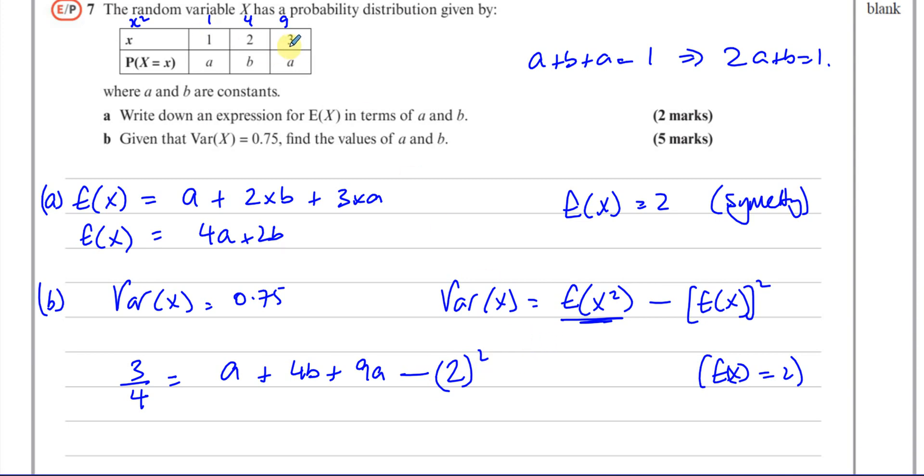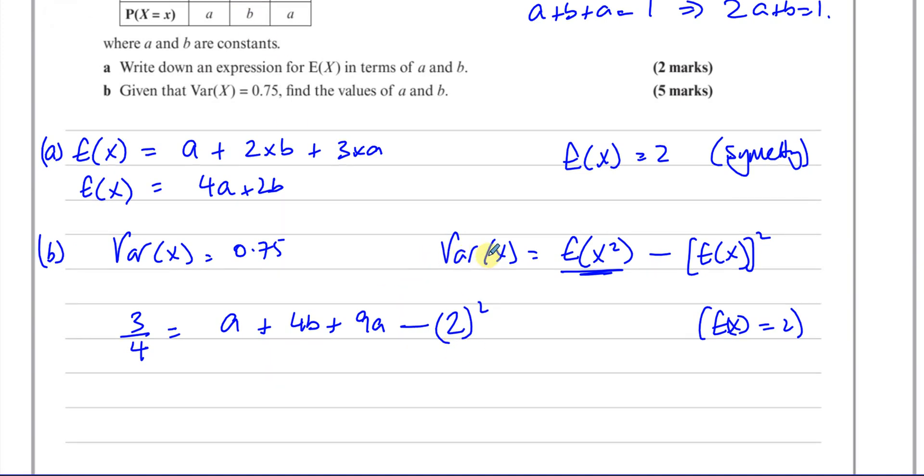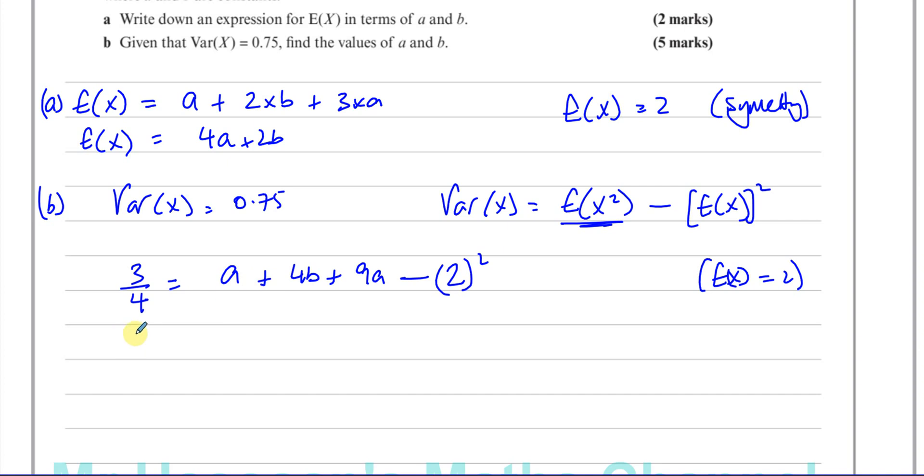Now, if I didn't see it symmetrical, then I'd have to use this and put it here, and I'd have to do 4a plus 2b and square it. I'll end up with a quadratic with a and b, and then I'll have this equation with a and b, and I will get my answer in the end. And it'll be fine. But if you can spot something like that, it's just going to make our life that much easier.